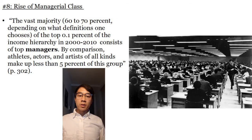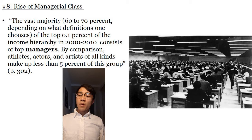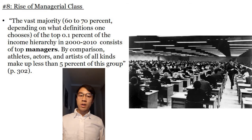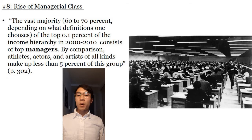Another claim Piketty makes is that there was the rise of the managerial class in the late 20th century and early 21st century in a way that was unprecedented. To quote: the vast majority — 60 to 70%, depending on what definitions one chooses — of the top 0.1% of the income hierarchy in 2000 and 2010 consists of top managers, that is pure bureaucrats. By comparison, athletes, actors, and artists of all kinds make up less than 5% of this group. So pop stars and movie stars constitute less than 5% of the group of wealthy people in modern times.